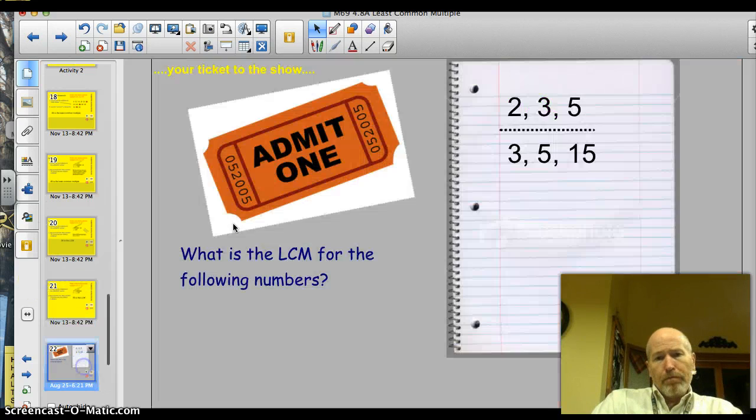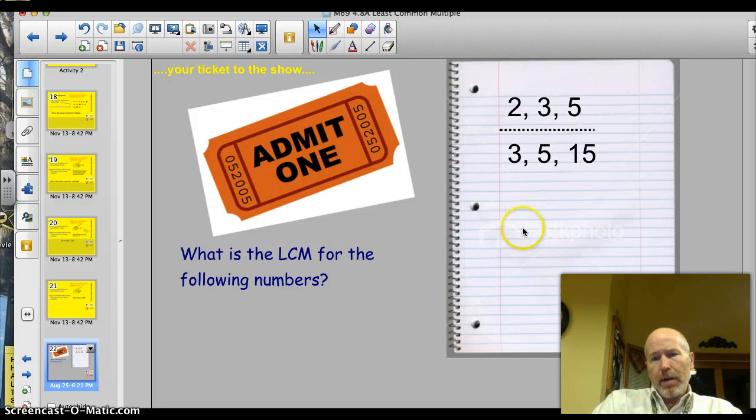Okay? All right. Here's your ticket to the show. Find the least common multiple for these two different sets of numbers. And I'll just pause for a second so you can copy those down. Okay. Do you remember which number you're going to start with if you're using my approach? That's right. Start with the largest. Skip count by that.